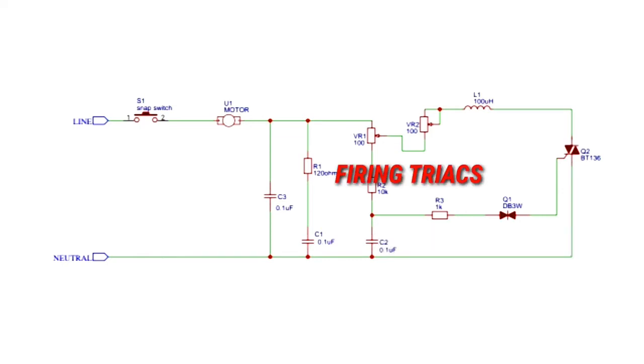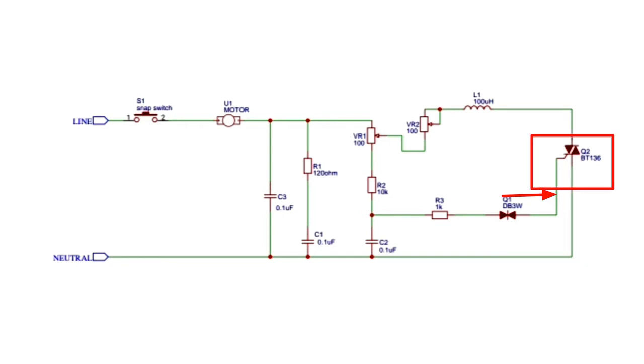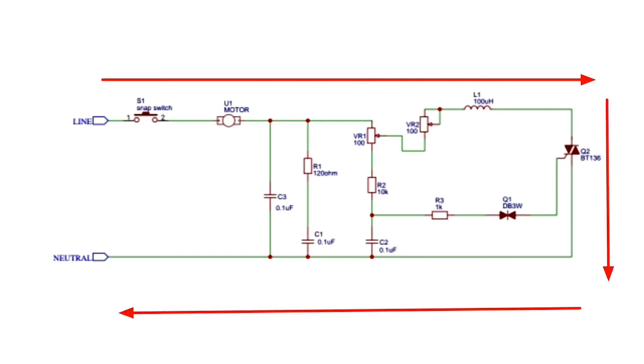Generally diacs are used for triggering or firing the triacs, and the same is done in this case. So after the diac triggers the triac, which is BT136 in our case, current starts to flow through the motor as it completes the entire path.